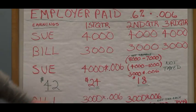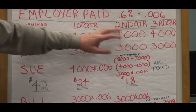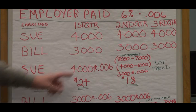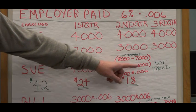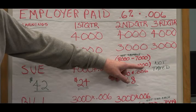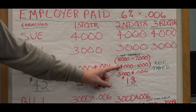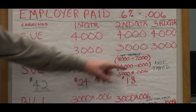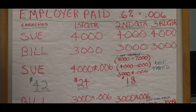In the second quarter for Sue, we're reaching the limit. Her pay is $4,000 in each quarter, so $8,000 is above the $7,000 cap. So I'm going to take the $8,000 and subtract that $7,000 out, and that leaves me with $1,000 that is not taxable. So I take that out of her pay — $4,000 minus $1,000 — and I get net taxable of $3,000. I multiply that times 0.006, and the second quarter for Sue is going to be $18 FUTA taxes paid.